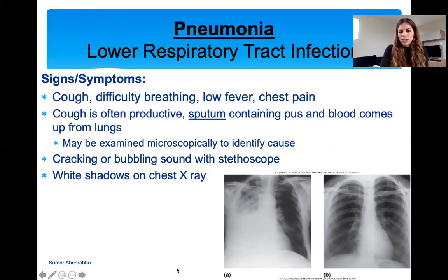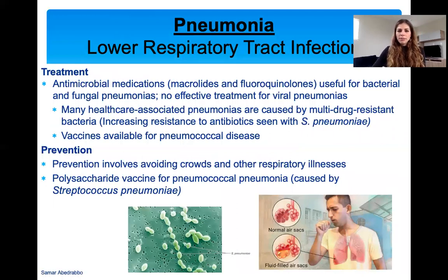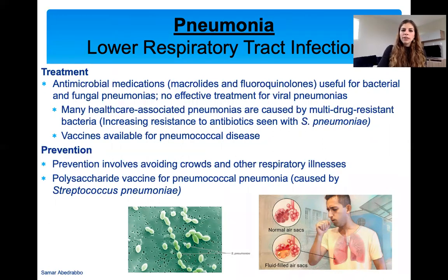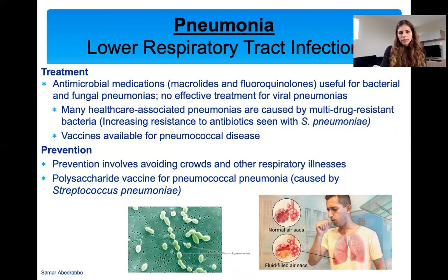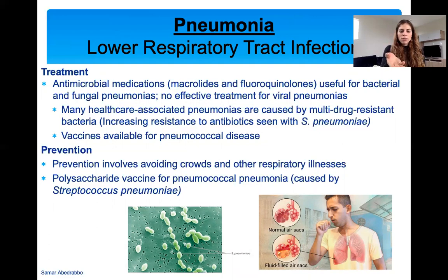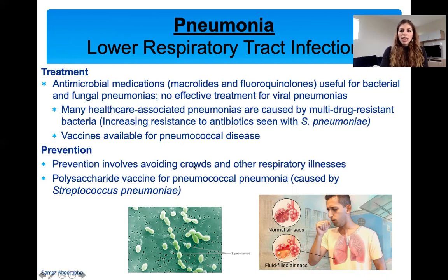Treatment: for bacterial or fungal pneumonia, different antibiotics can be used. For viral pneumonias, we do not have any effective treatment — if you get pneumonia from SARS-CoV-2, you cannot take antibiotics. Many healthcare-associated pneumonias are caused by drug-resistant bacteria, making them very hard to treat. We do have a vaccine for pneumococcal disease — specifically a polysaccharide vaccine using sugars from Streptococcus pneumoniae to initiate an immune response. Prevention is to avoid crowds and other respiratory illnesses that could put you at higher risk.